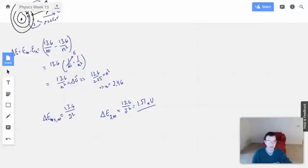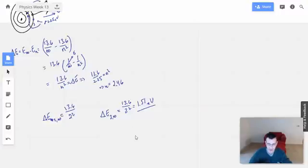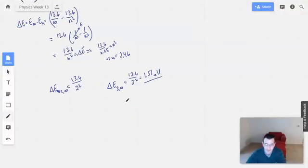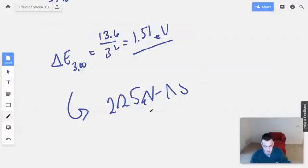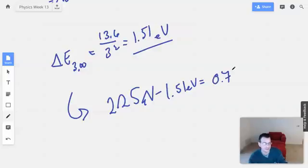So the idea though is we're going to have some energy left over. So we're going to have 0.74. Therefore, we're going to have 2.25 electron volts minus 1.51 electron volts equals 0.74 electron volts.